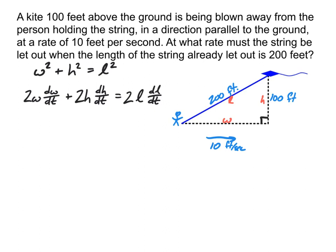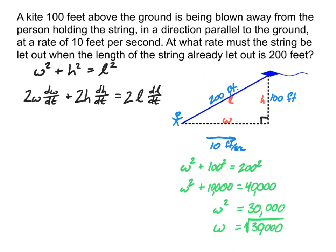So we can go ahead and we can use Pythagorean theorem to solve for that. And so when we solve that out for W, we end up finding that W equals the square root of 30,000, or if you actually remember how to reduce that radical, we could simplify that down to be 100 root 3, which is at least a little bit easier to look at.